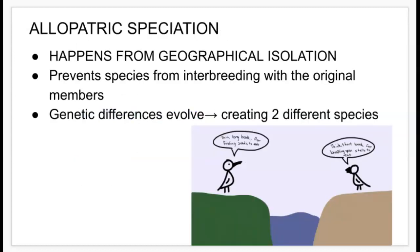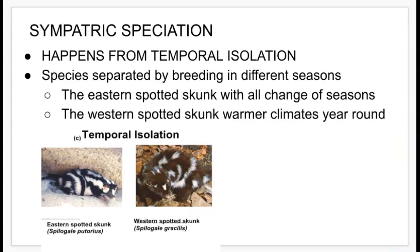Allopatric speciation happens from geographical isolation. It prevents species from interbreeding with the original members, much like the Galapagos finches. The genetic differences that evolve create two different species. Sympatric speciation happens from temporal isolation, and the species are separated by breeding in different seasons.